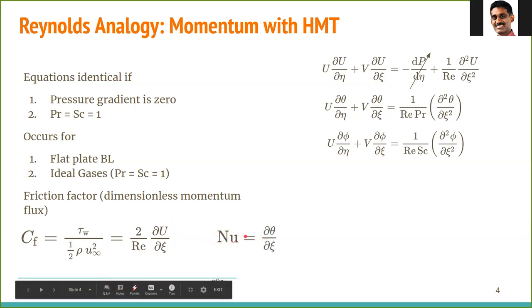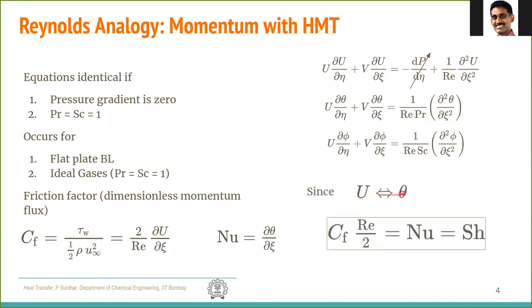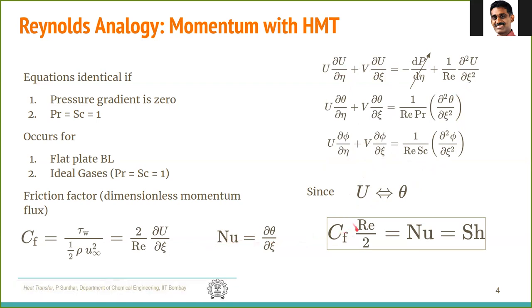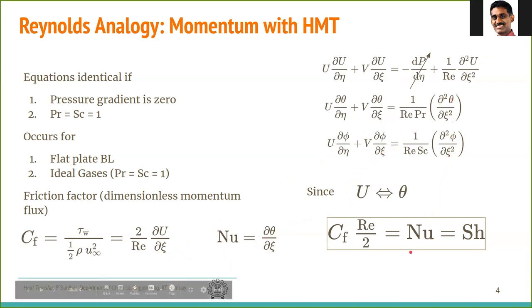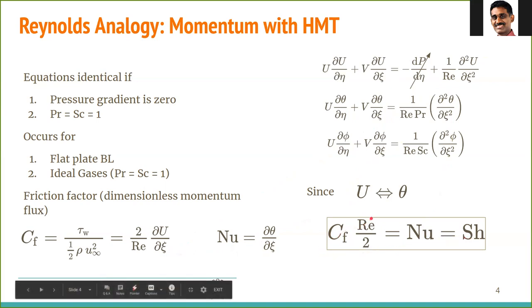This expression is exactly identical to the Nusselt number expression, which involves the gradient in θ. Since all three equations are identical under Reynolds analogy conditions, u and θ are replaceable — the same expressions just called by different variable names. Since the solutions are identical, C_f × Re/2 equals the Nusselt number equals the Sherwood number. This expression is called the Reynolds analogy.